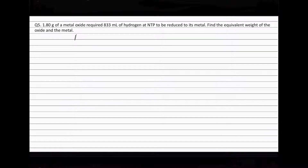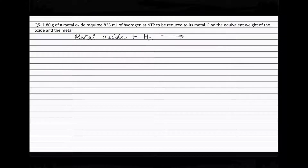The metal oxide reacts with hydrogen to form the metal. Weight of metal oxide is 1.80 grams. Volume of hydrogen used is 833 milliliters.